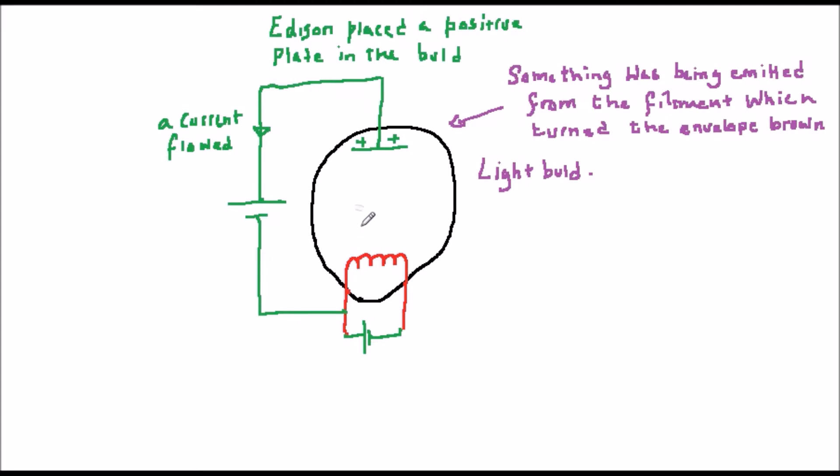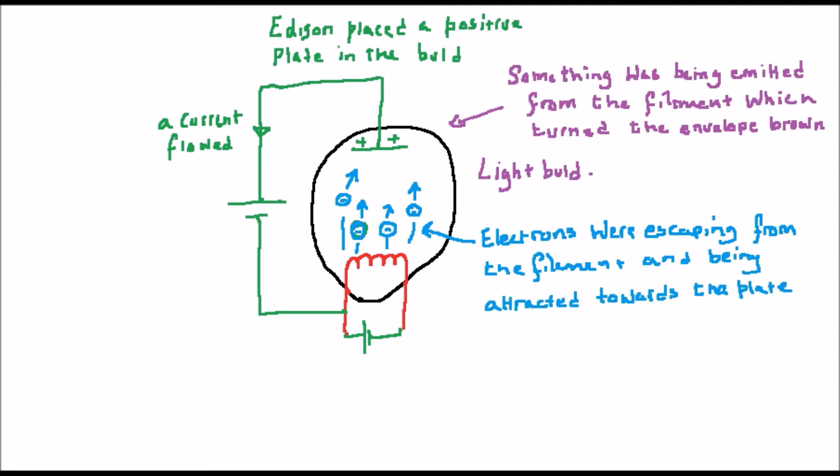Firstly, the electrons in the filament gain energy due to its heat and some of them get enough energy to escape the confines of the metal and make their way into the vacuum of the envelope. From here they get attracted to the plate or anode because it is positively charged and attracts the negative electrons and flow back to the battery.